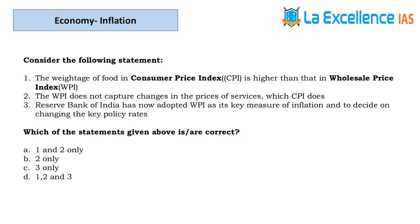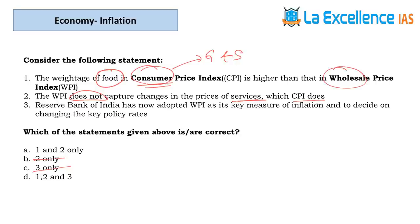The next question is about CPI and WPI — a most expected question. Statement 1 — weightage of food in Consumer Price Index is higher than in Wholesale Price Index. Common sense: consumers spend most on food, so statement 1 is correct. Statement 2 — WPI does not capture changes in prices of services whereas CPI does. Consumer price index covers goods and services; WPI covers goods only. Statement 2 is right.